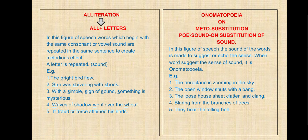Alliteration — in this figure of speech, words which begin with the same consonant or vowel sound are repeated in the same sentence to create a melodious effect. A letter or sound is repeated. Examples: 'The bright bird flew' — B repeated. 'She was shivering with shock' — SH repeated. 'With a simple sign of sound, something is mysterious' — S repeated. 'Waves of shadow went over the wheat' — W repeated. 'If fraud or force attained his hands' — F repeated.